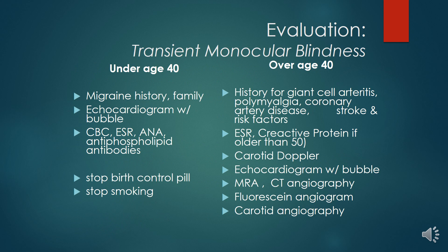Transient monocular blindness can be divided into two groups. In patients under 40, causes may include migraine; obtain a migraine history, family history, echocardiogram, CBC, ESR, ANA, and antiphospholipid antibodies; advise stopping birth control pills and smoking. For older patients, consider history of giant cell arteritis, polymyalgia, coronary artery disease, and stroke risk factors. Investigations include ESR, C-reactive protein, carotid Doppler, echocardiogram, MRA, CT angiography, fluorescein angiogram, and carotid angiography.